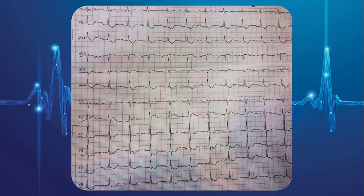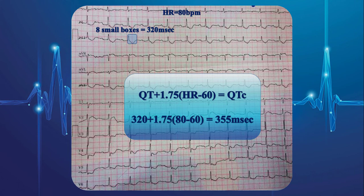Here is the last EKG example. What do you think about the QT interval? Is it long, short, or normal? The actual QT interval is about 8 small squares. Furthermore, the heart rate is about 80 beats per minute. So, according to Hodges formula, the QTc is about 355 milliseconds, which is slightly short.